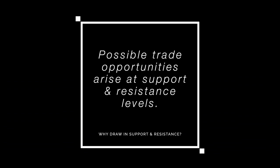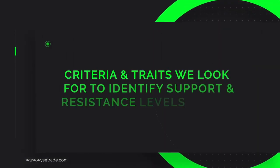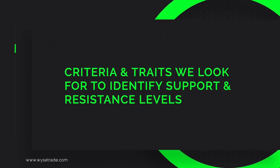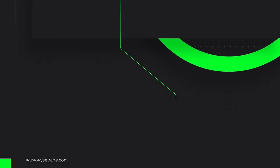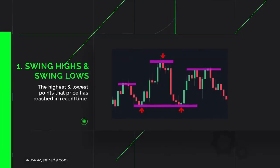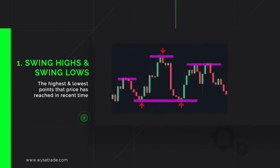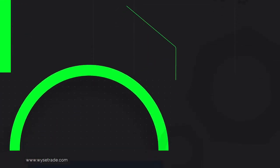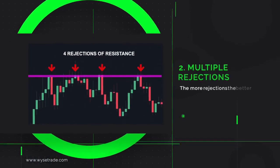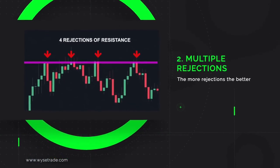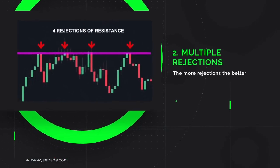There is specific criteria we look for in order to identify support or resistance levels. One: we look for the extreme swing highs and swing lows, meaning the highest and lowest points that price has reached in recent time. Two: we like to look for multiple rejections of an area — the more rejections the better.